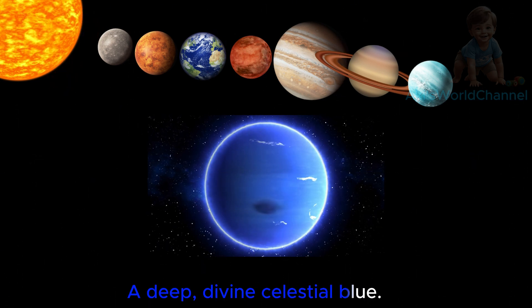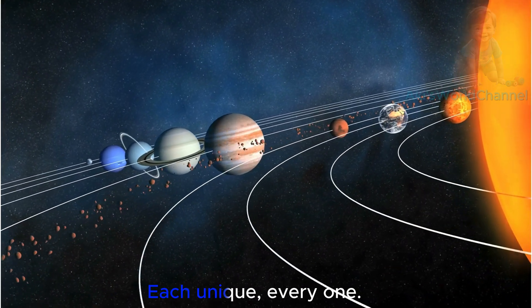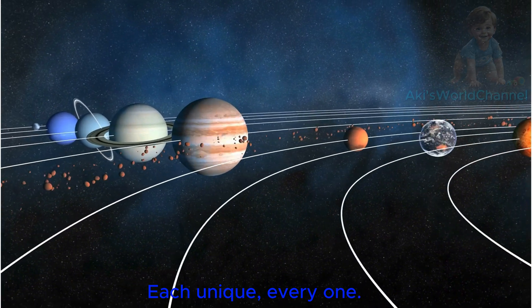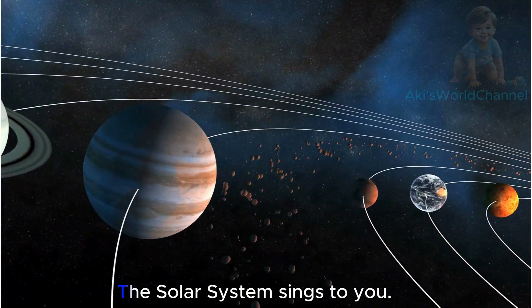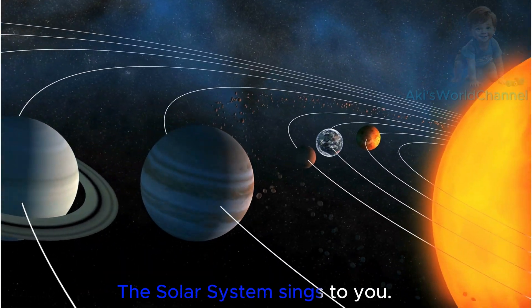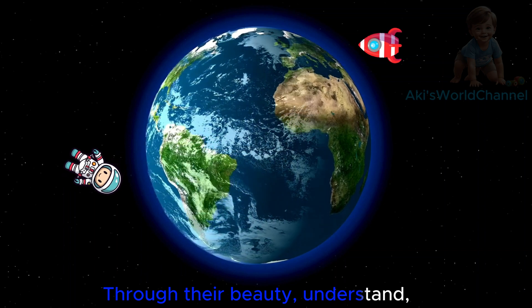Planets spinning round the sun. Each unique, everyone. From Mercury to Neptune's blue, the solar system sings to you. Through their beauty, understand the wonder of the great creator's hand.